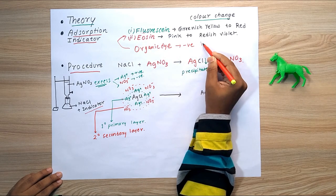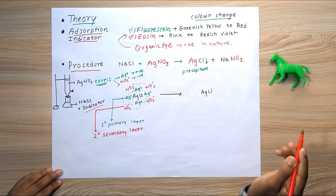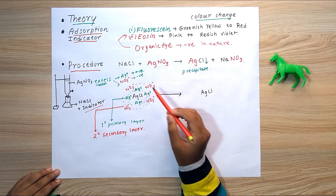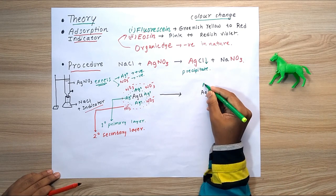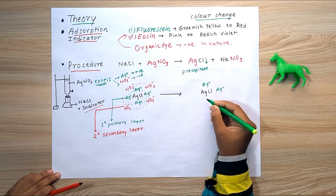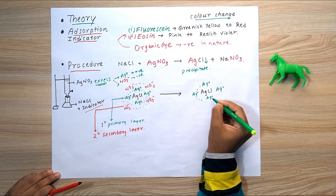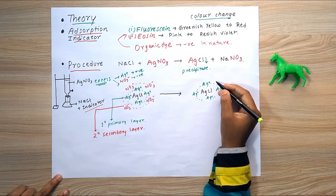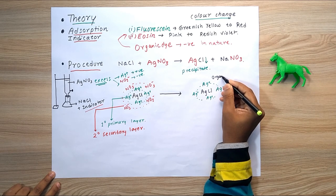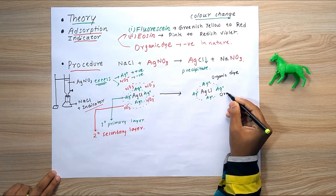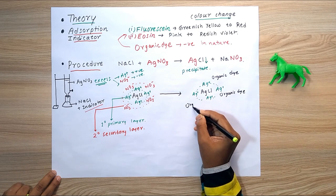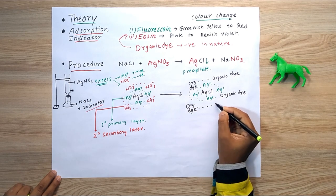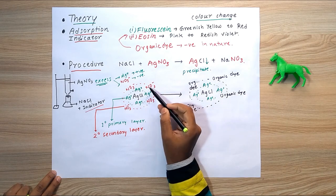The organic dye is negatively charged and has a much higher adsorption power than the nitrate ion. Therefore, the nitrate ion in the secondary layer is replaced by the organic dye. The Ag+ ion still forms the primary layer around the AgCl precipitate, but the secondary adsorption layer, previously occupied by NO3-, is now replaced by the organic dye, which has greater adsorption power.